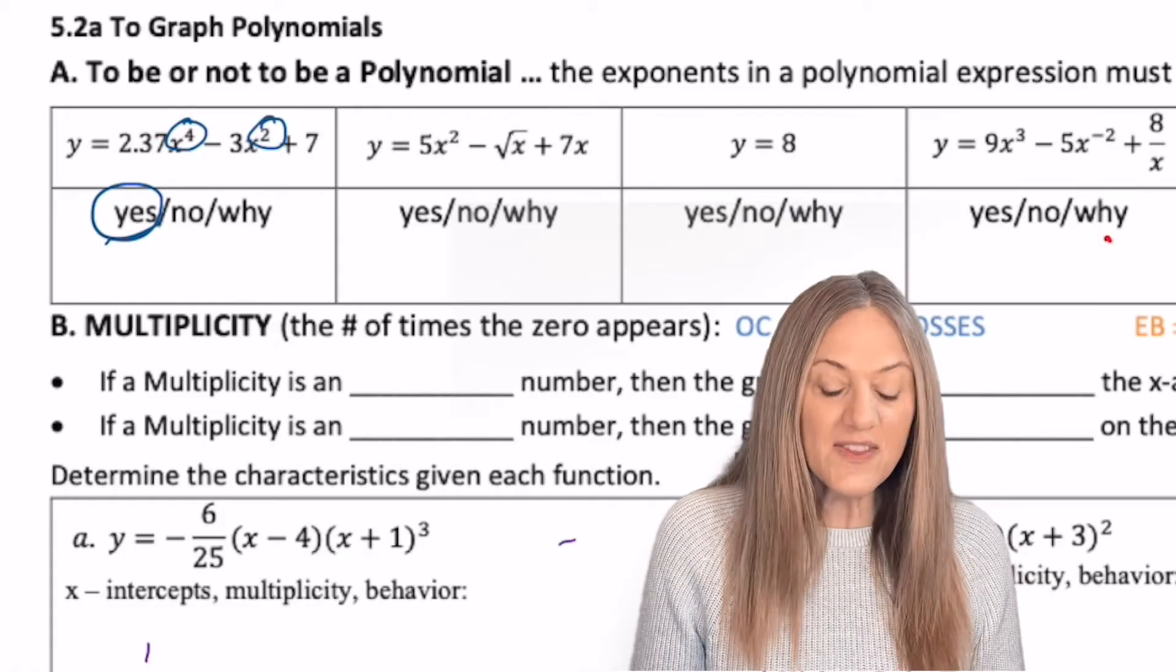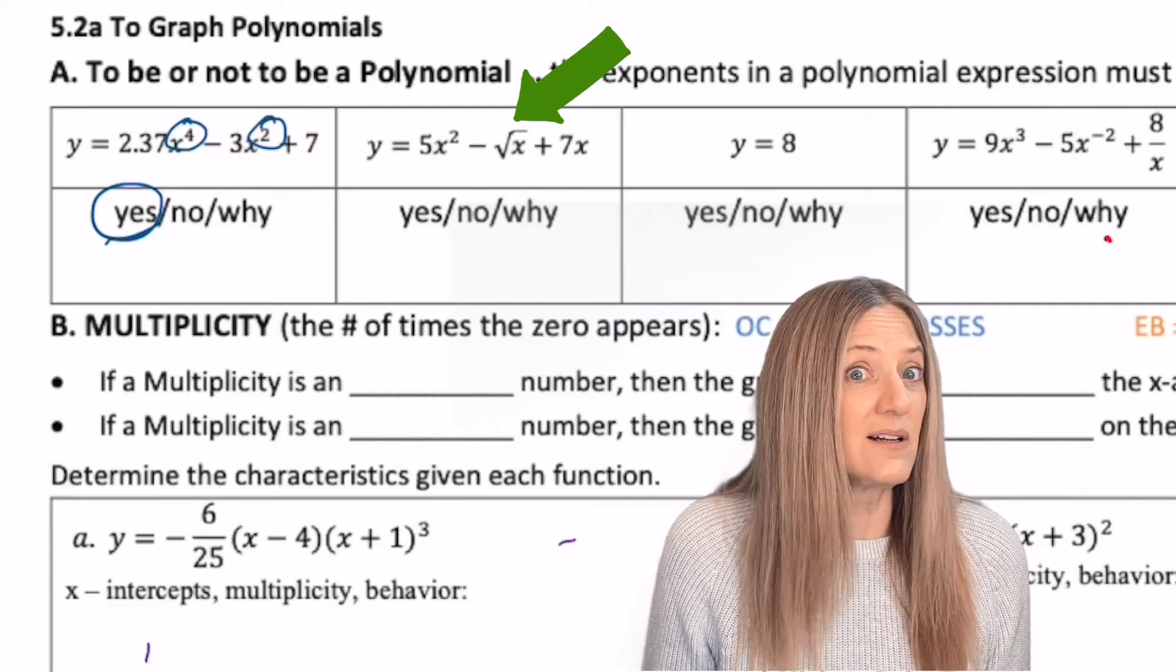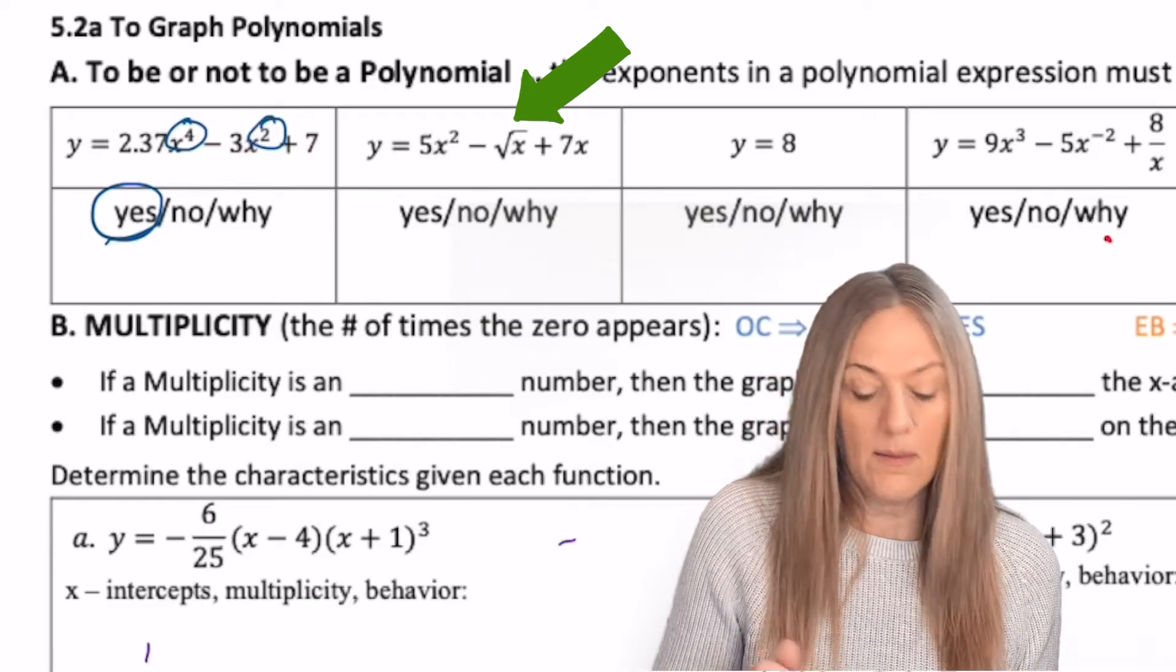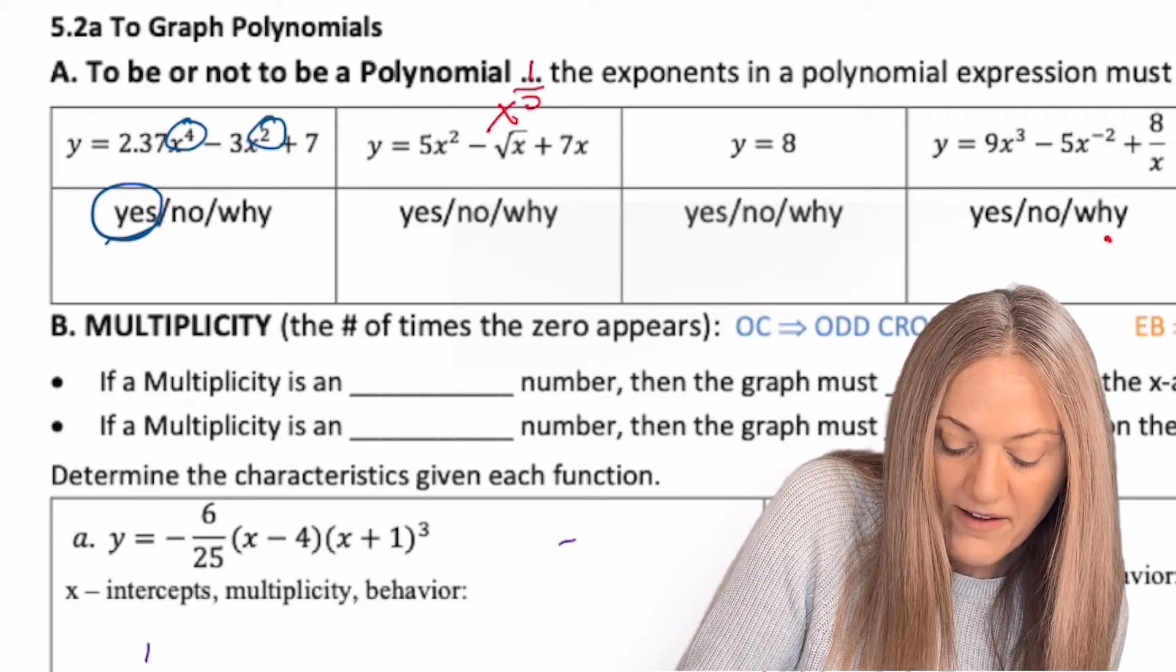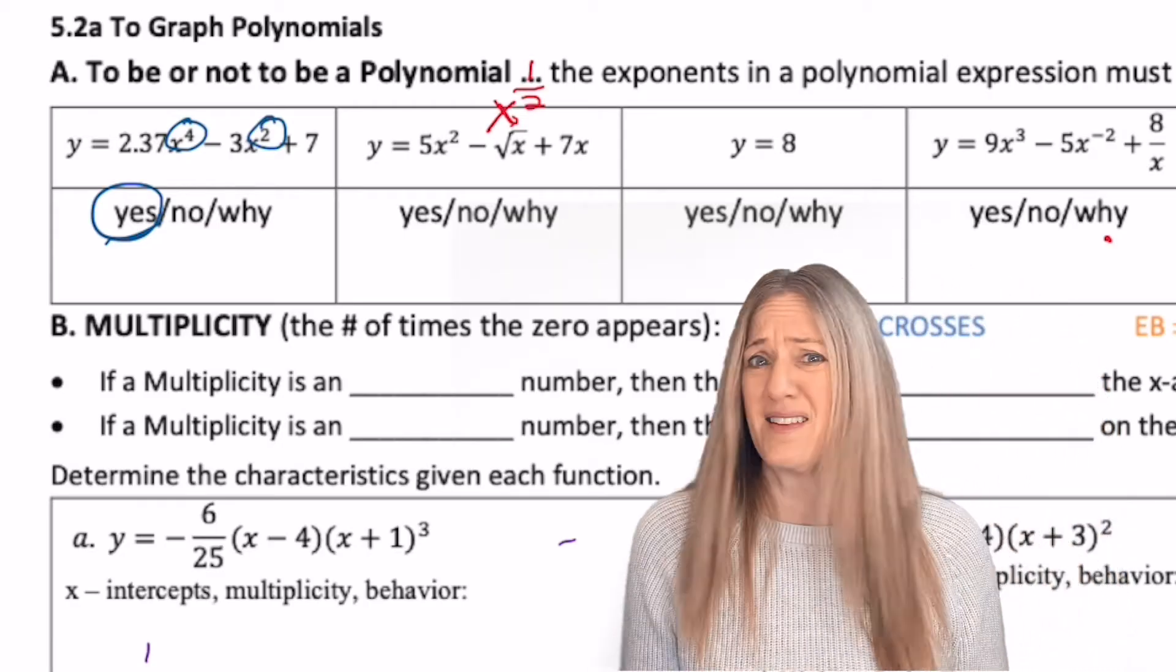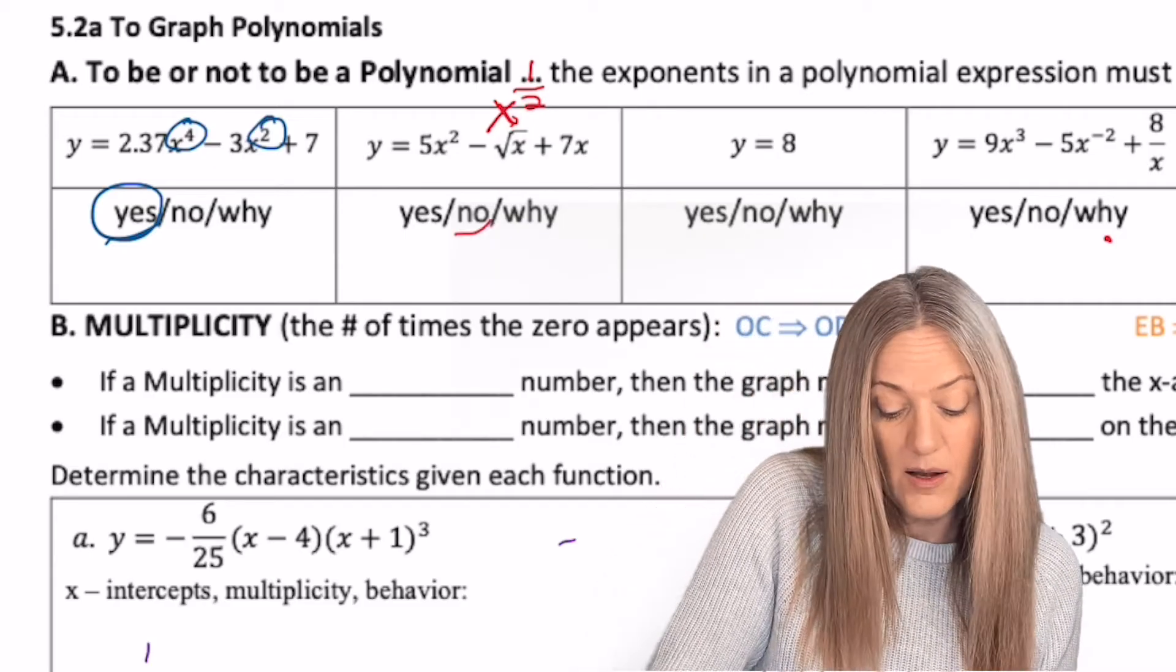Take a look at the next one. What do you think? On the second one, that square root of x seems a little suspicious, and it should, because square root of x is the same as x to the 1 half power. 1 half is not an integer, therefore, this one is not a polynomial.